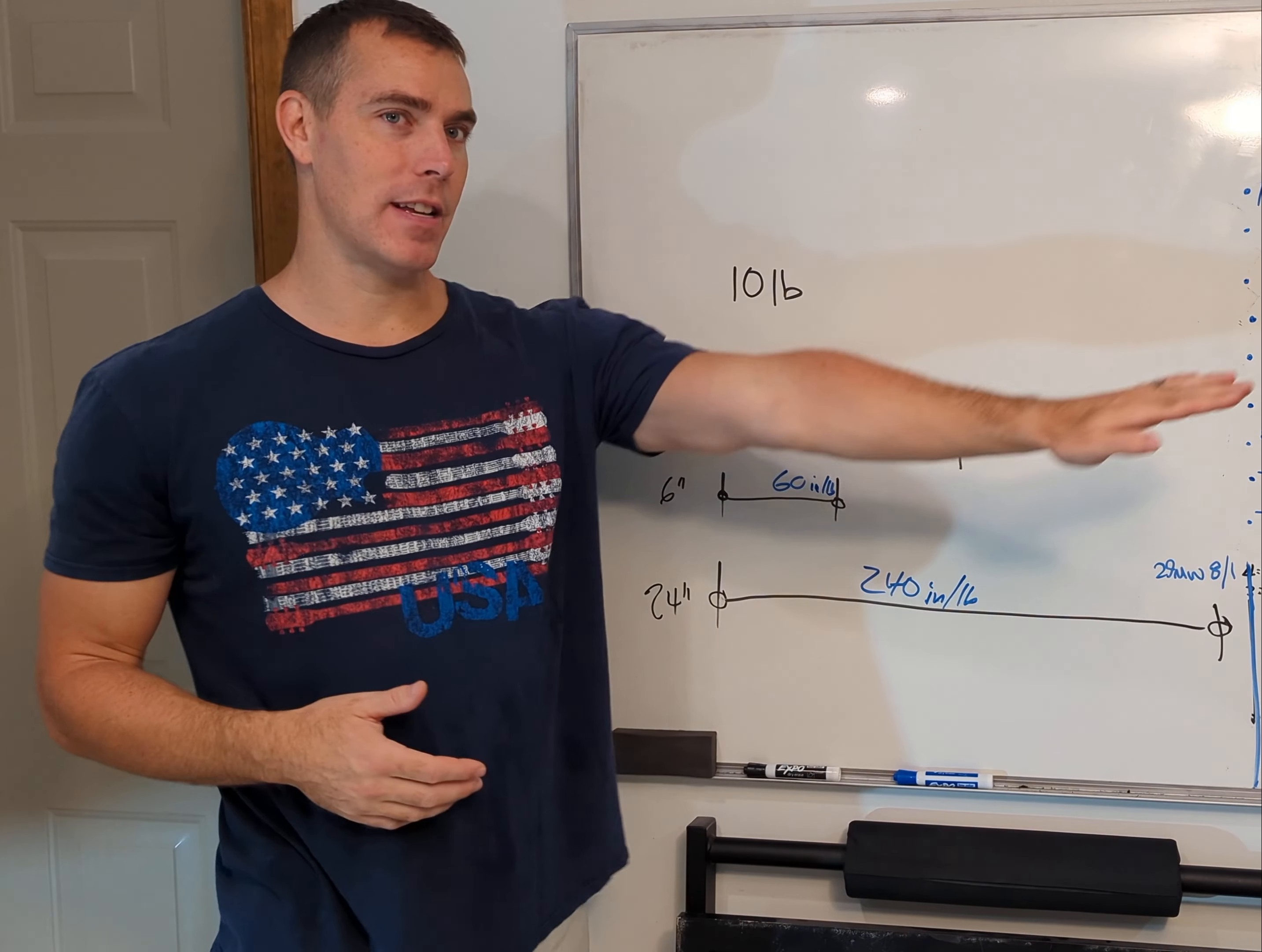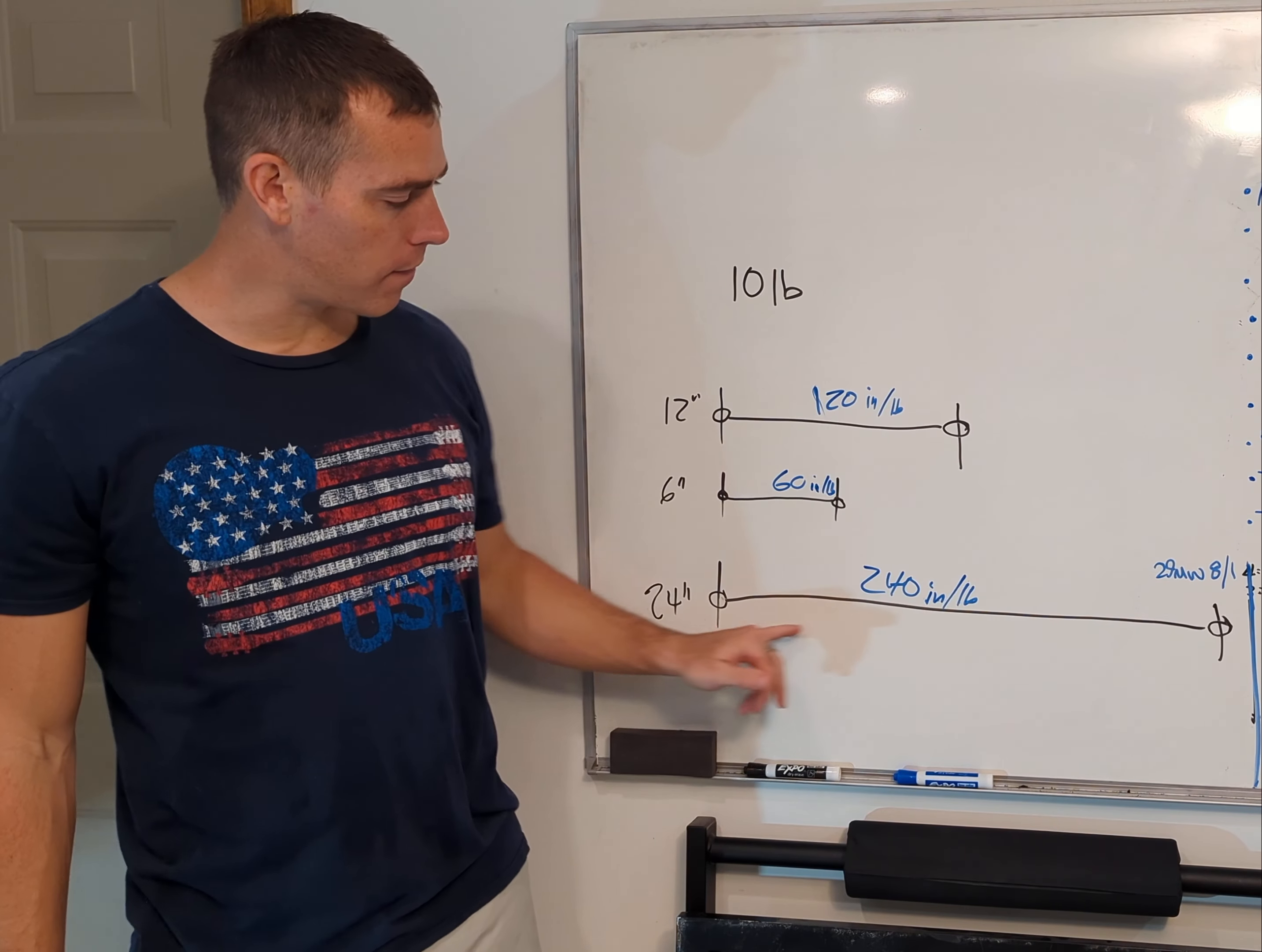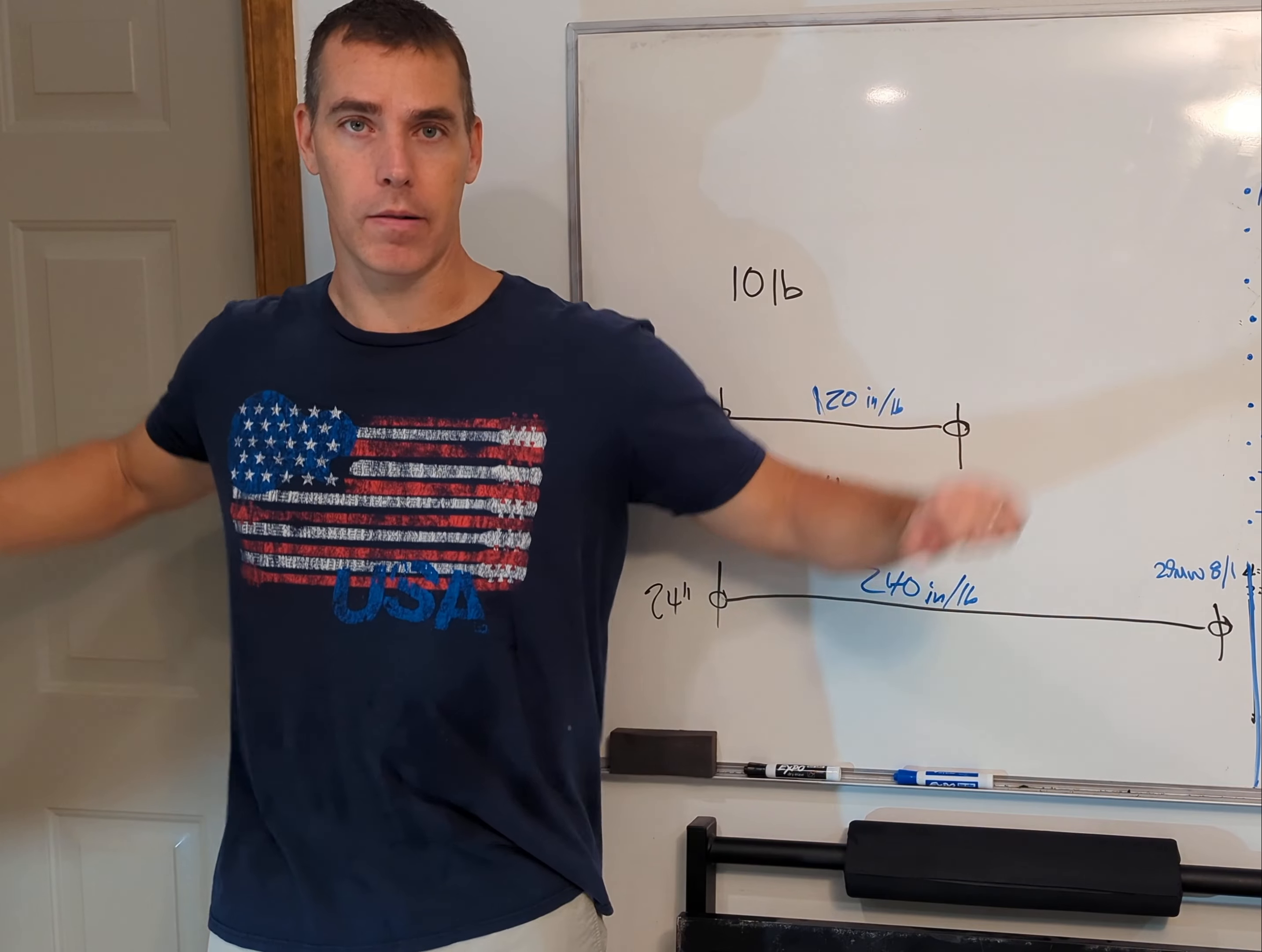So the further the distance goes away, the more torque goes up. So if I have a 10-pound dumbbell and I do a deltoid fly, I'm going to have basically 24 inches for distance from that weight to my joint. So that's going to create 240 inch pounds of torque.